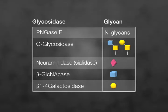As shown before, PNGase F removes most N-glycans. O-glycosidase removes core-1 and core-3 O-glycans.